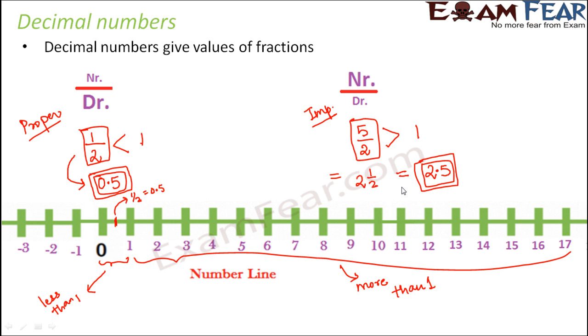So this is the purpose of decimal numbers — decimal numbers are basically values of fractions. All decimal numbers have a decimal point, and the presence of the decimal point tells us that this is a decimal number.